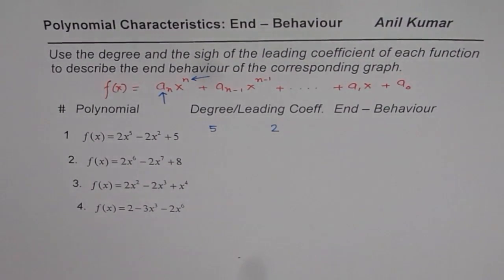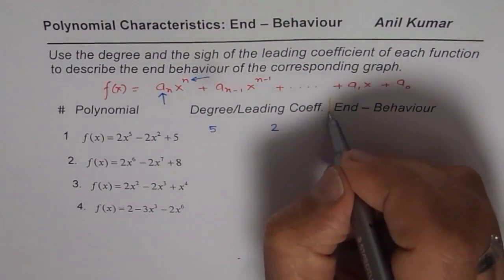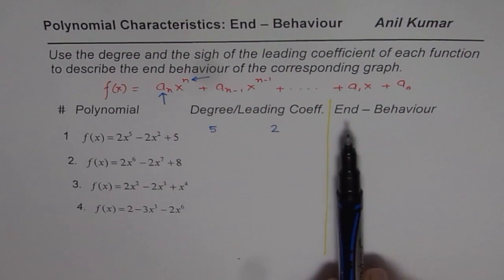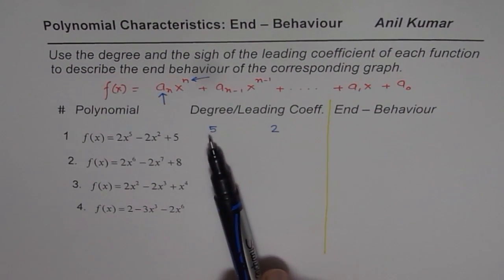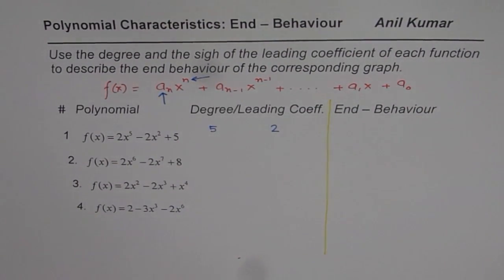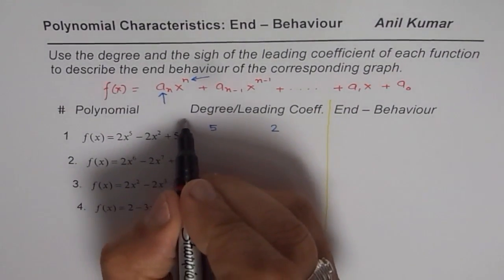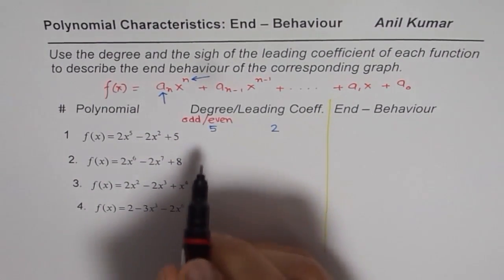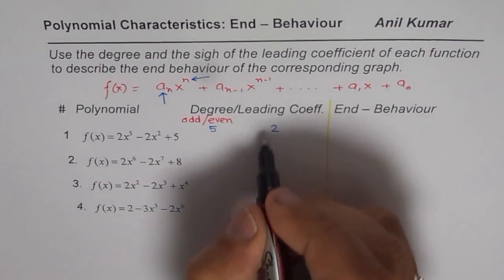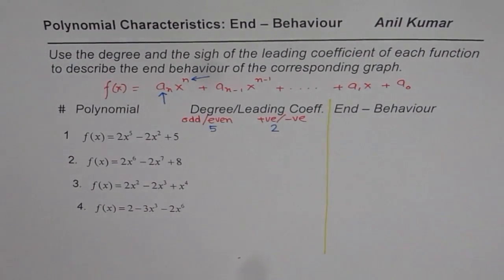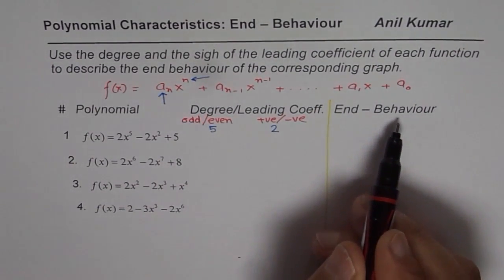Now let's try to understand end behavior. End behavior depends on the degree and the leading coefficient. When talking about end behavior, we are not interested in the actual degree value — we are interested in whether the degree is odd or even. Similarly, for the leading coefficient, we are not interested in the number itself, but whether it is positive or negative. That defines the end behavior.